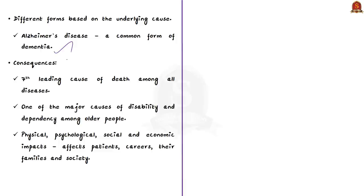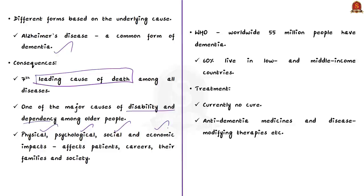What are the consequences of dementia? It is the seventh leading cause of death among all diseases and a major cause of disability and dependency among older people. It has physical, psychological, social, and economic impacts — affecting not only the person with dementia but also their caregivers, families, and society at large. According to a WHO report, around 55 million people (5.5 crore) have dementia worldwide, with over 60% living in low- and middle-income countries. Currently, there is no cure for dementia, but treatment is available to manage the illness — including anti-dementia medicines and disease-modifying therapies.